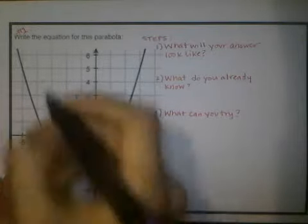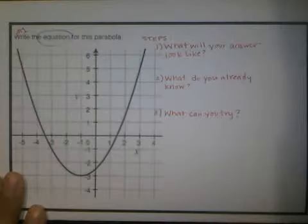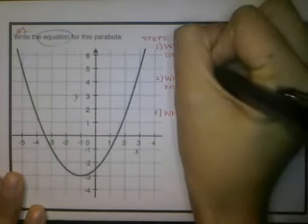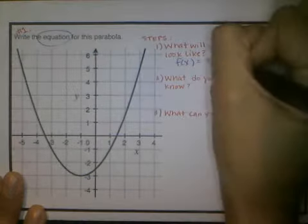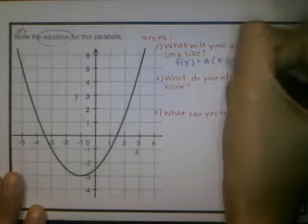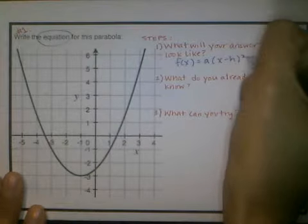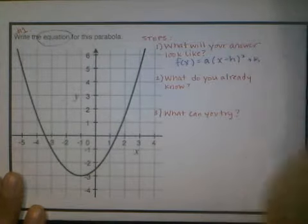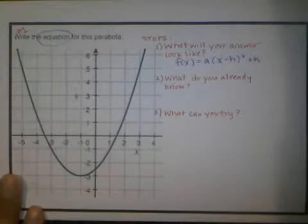When they say the equation, or when you heard me say vertex form, you should immediately think, okay, that's f(x) = a(x - h)² + k. And instead of worrying right away about how you're going to come up with an answer that looks like that, focus on what you already know.